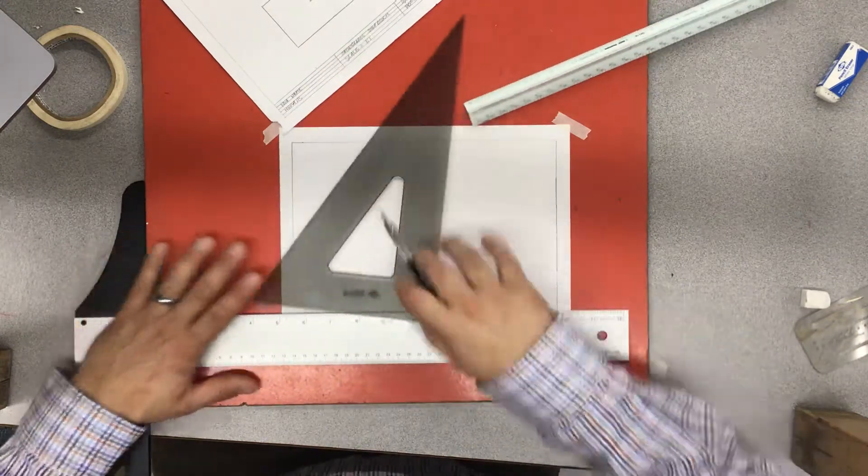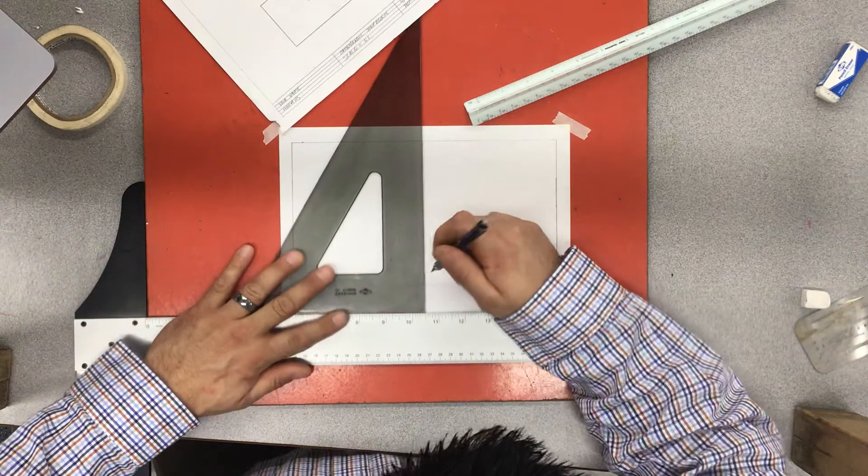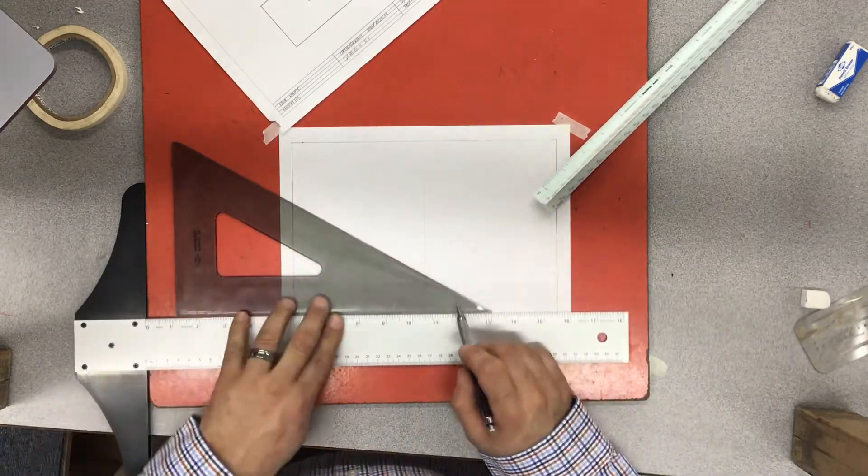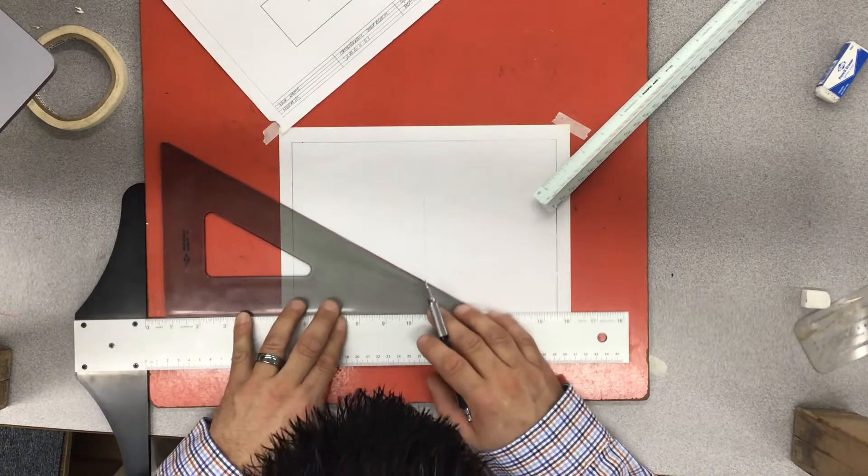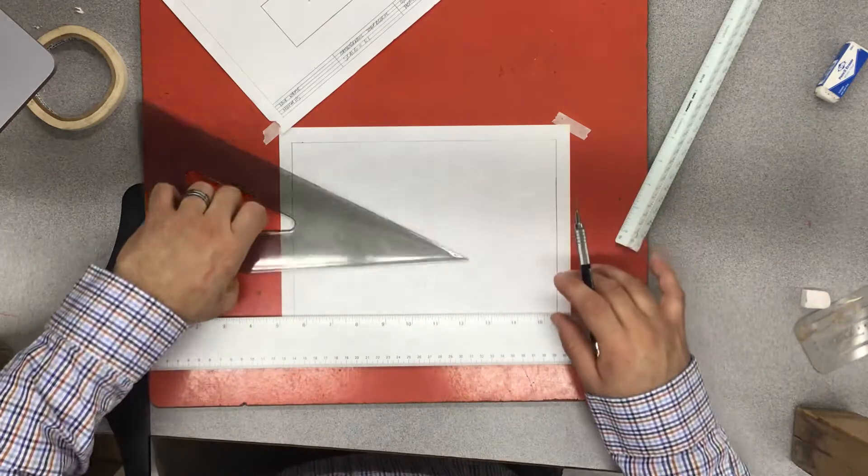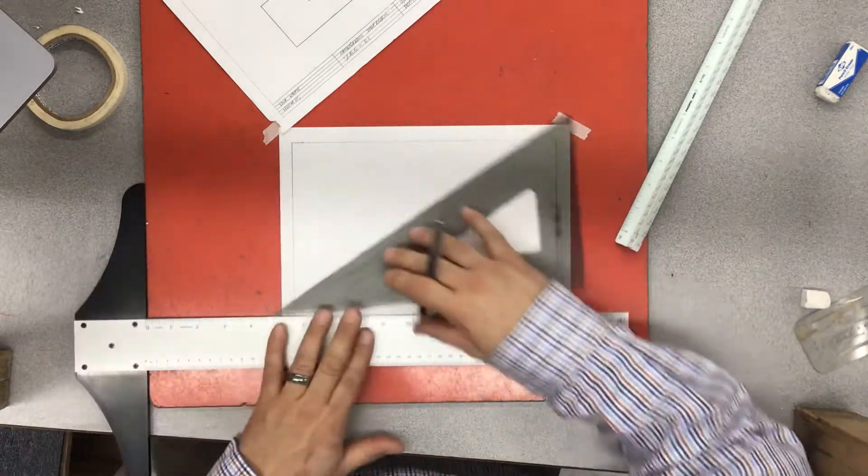I'm going to draw my start point, I'm going to draw a light vertical up. I'm going to always make sure my 30 degree part of my triangle is against the T-square. I'm going to draw one line up to the left, I'm going to draw one line up to the right.